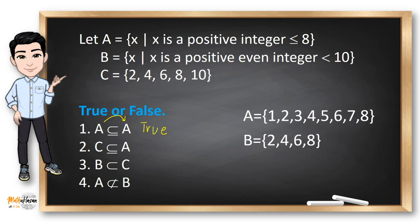Number 2: Is C a subset of A? Notice that C has elements 2, 4, 6, 8 and 10, while A only has 1, 2, 3, 4, 5, 6, 7 and 8. Since A does not have 10, C is not a subset of A. So this is false.